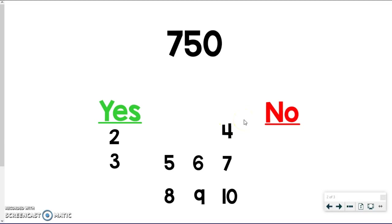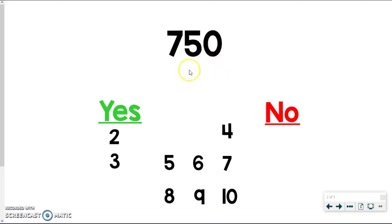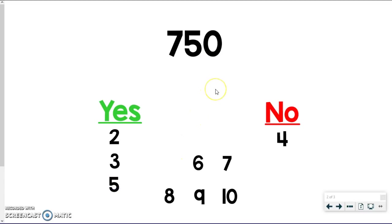For 4: look at the last two digits, which form 50. Is 50 divisible by 4? No — 48 is divisible by 4, then the next multiple is 52, so 50 is not a multiple of 4. That goes on the no side. For 5: the rule is if it ends in 0 or 5, and this ends in 0, so yes, it's divisible by 5. For 6: the rule is if it works for both 2 and 3, and both are on the yes side, so 6 goes on the yes side too.